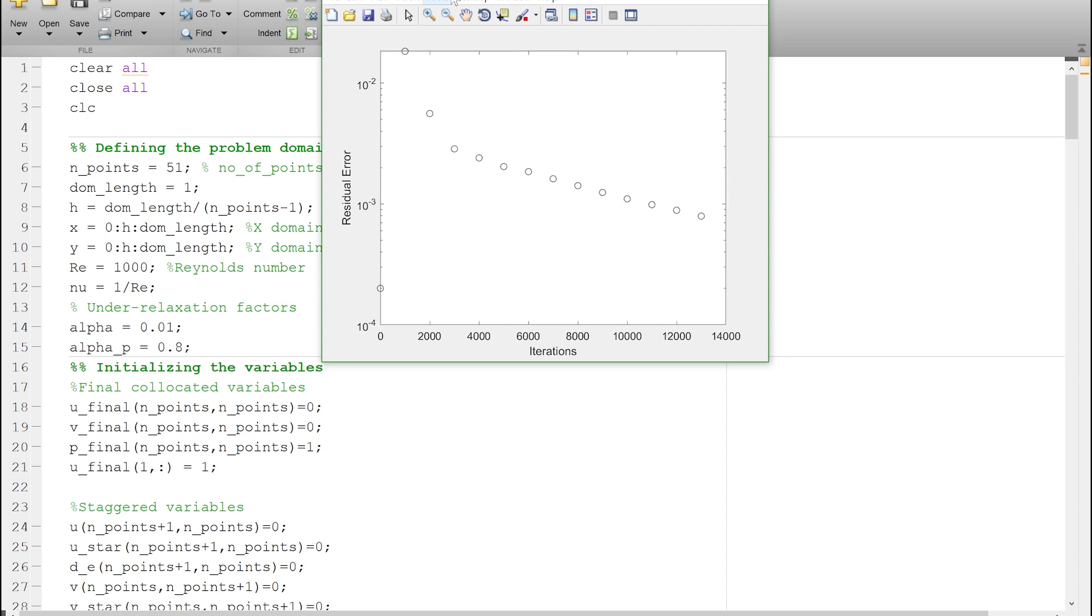You can try this particular variation of this simple algorithm for higher Reynolds number. However, I have tested this code for a Reynolds number of up to 5000 and it works just fine. Give it a shot. I would put the link to the code again in the description of this video so that you can access the code and you can also compare both of the codes.